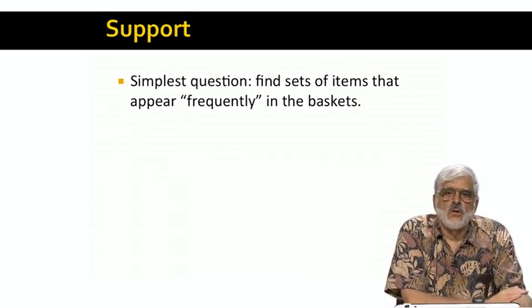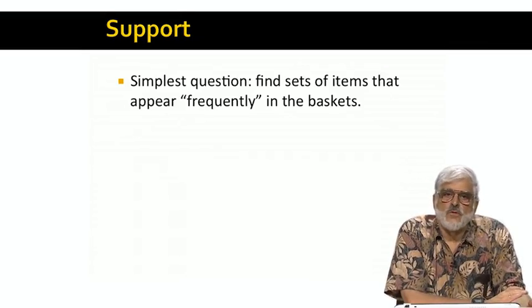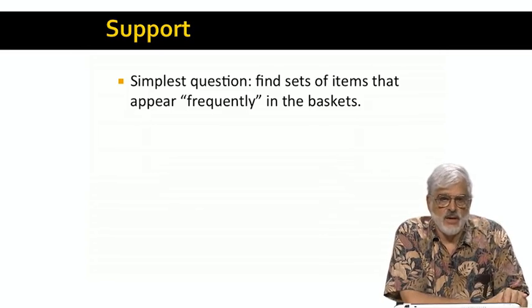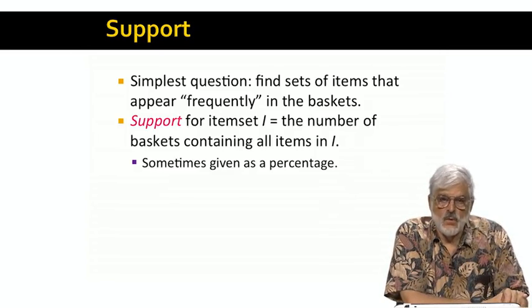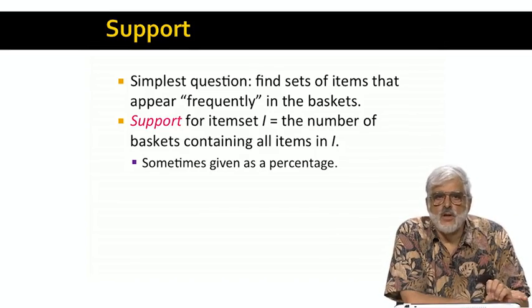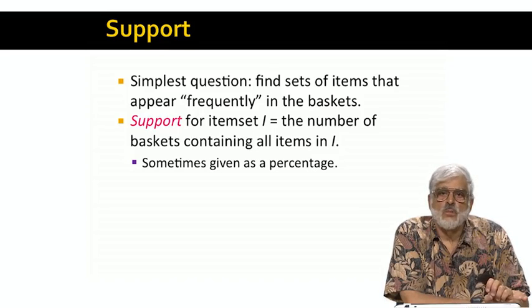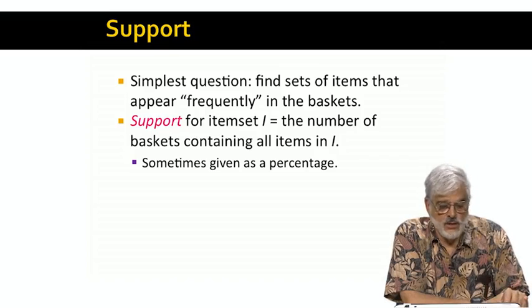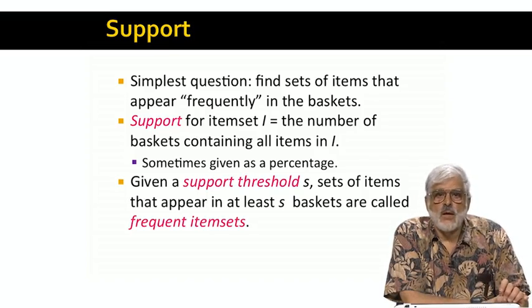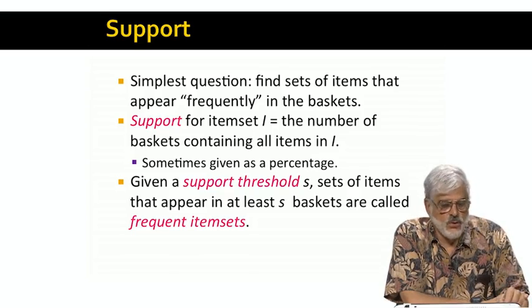The most useful and also most basic question to ask about data in the form of market baskets is to find those sets of items that appear in some minimum number of baskets. We'll define the support for an item set to be the number of baskets of which that item set is a subset. We can give the support either as an absolute number or as a percentage of all the baskets. The data mining problem called frequent item sets involves a number or percentage s called the support threshold. Any set of items with support at least s is called a frequent item set.